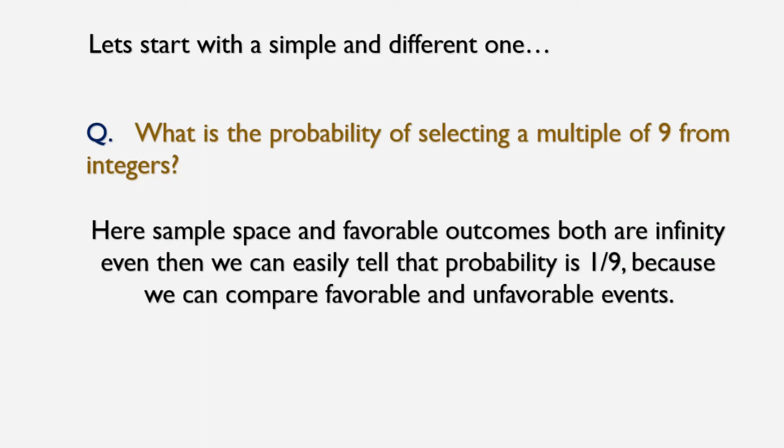Here, sample space and favorable outcomes both are infinity. Even then we can easily tell that the probability is 1/9 because we can compare favorable and unfavorable events. We know that after every 9 numbers there will be a multiple of 9. Hence, on average we can tell that there is at least one multiple of 9 from 9 numbers. So the probability is 1/9.